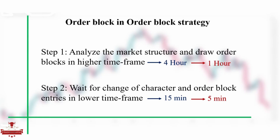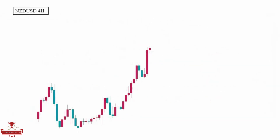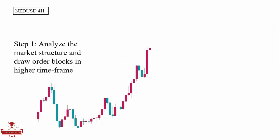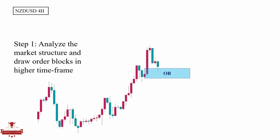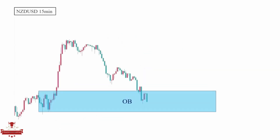Let me explain the steps of this strategy on the candlestick chart. Look at this 4-hour chart of the New Zealand dollar, which is our higher time frame. In the first step, we analyze the market structure and point out the most recent order blocks. Here we have an uptrend with a recent move with imbalance and break of structure. So this level is a perfect order block zone that can potentially get rejected and give us a trading opportunity. Now all we have to do is wait for the price to touch the order block zone. In the second step, we zoom in on our entry time frame and look for trading opportunities.